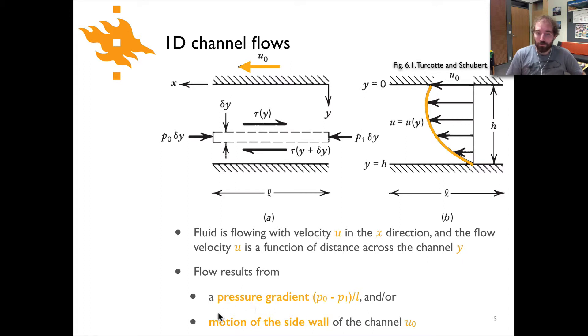You can also have channel flow as a result of motion of one of the walls of the channel. Up here where we have this u0 that's a velocity, the arrow is meant to mean that the top of the channel, that wall, is actually moving with respect to the wall at the bottom. That motion of the top wall can make the channel flow occur as well.